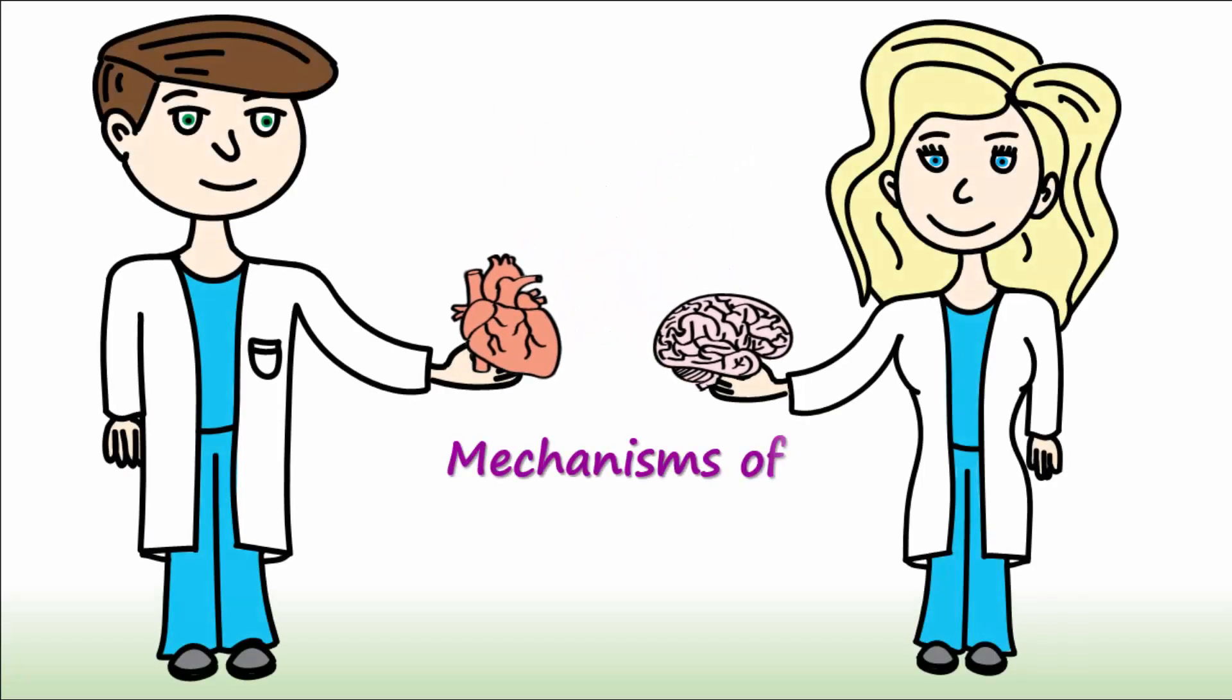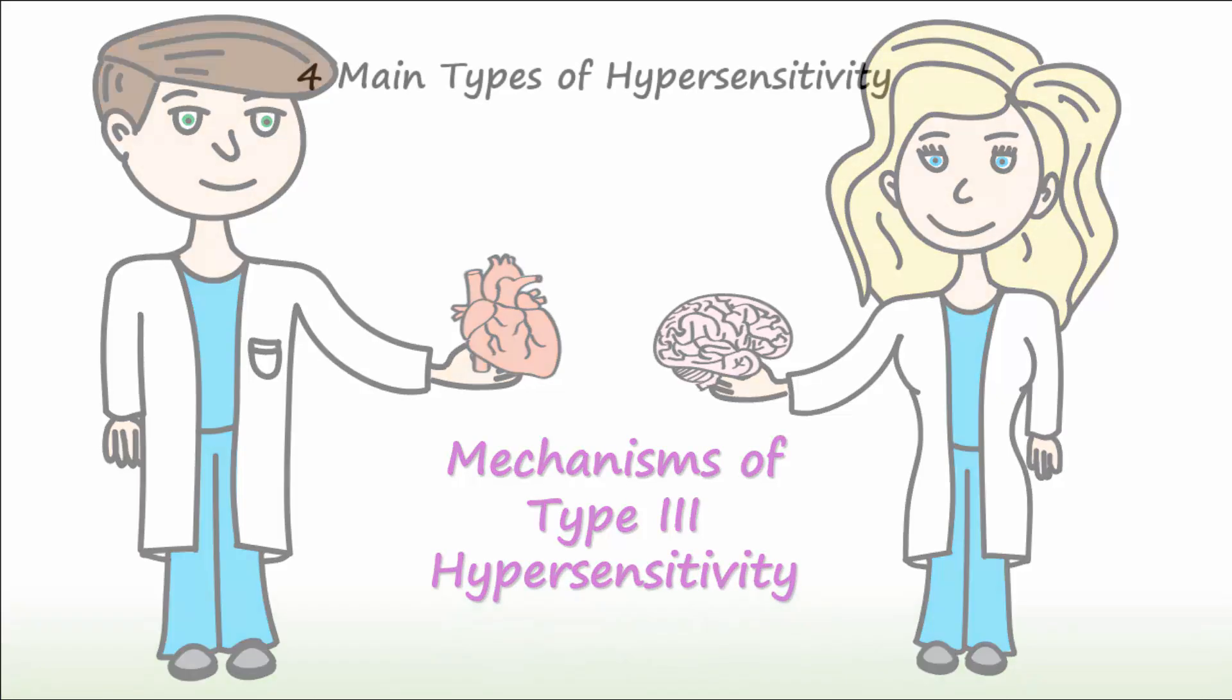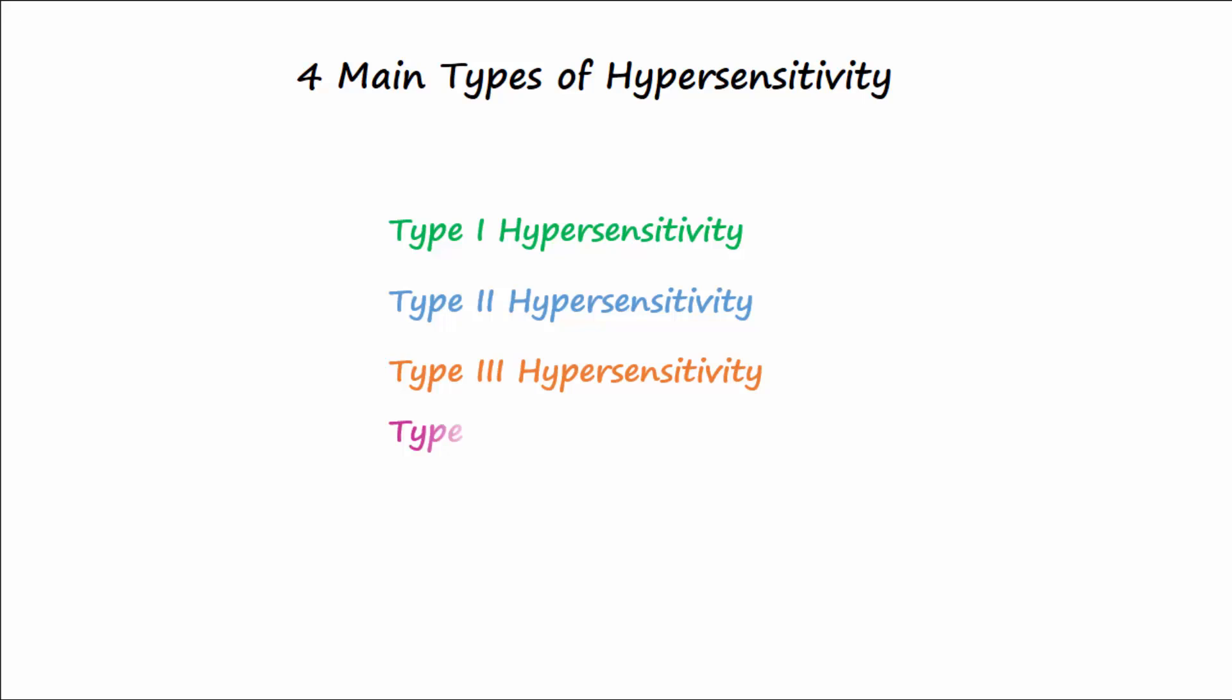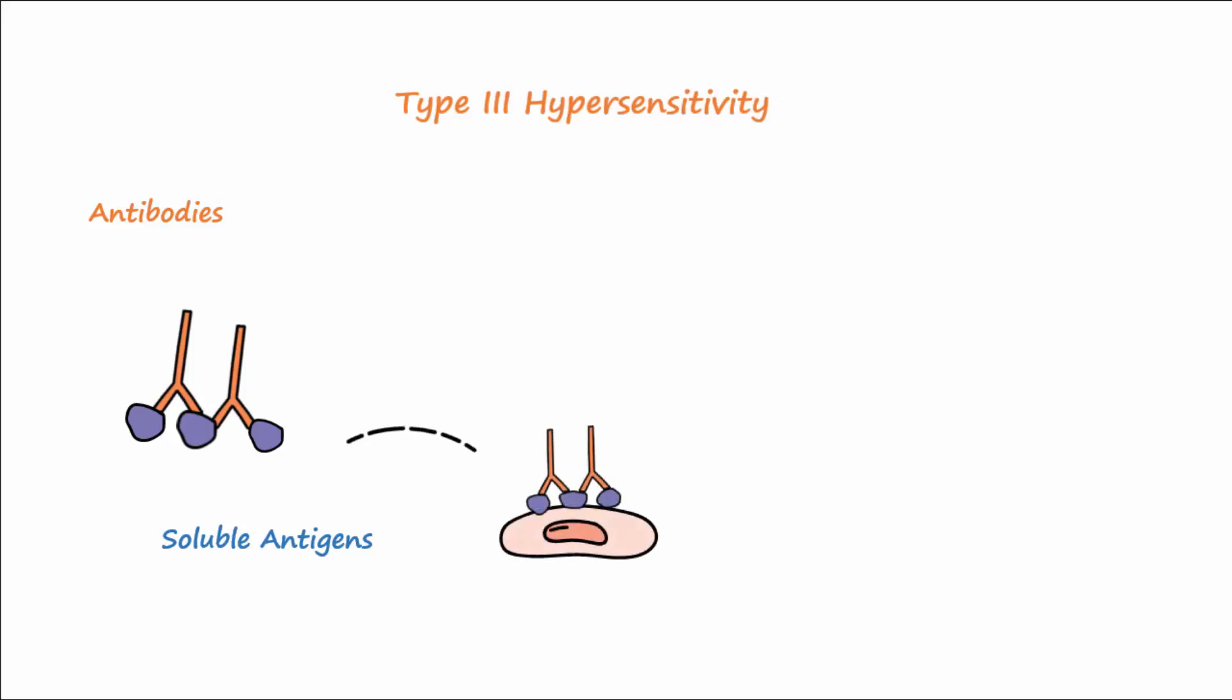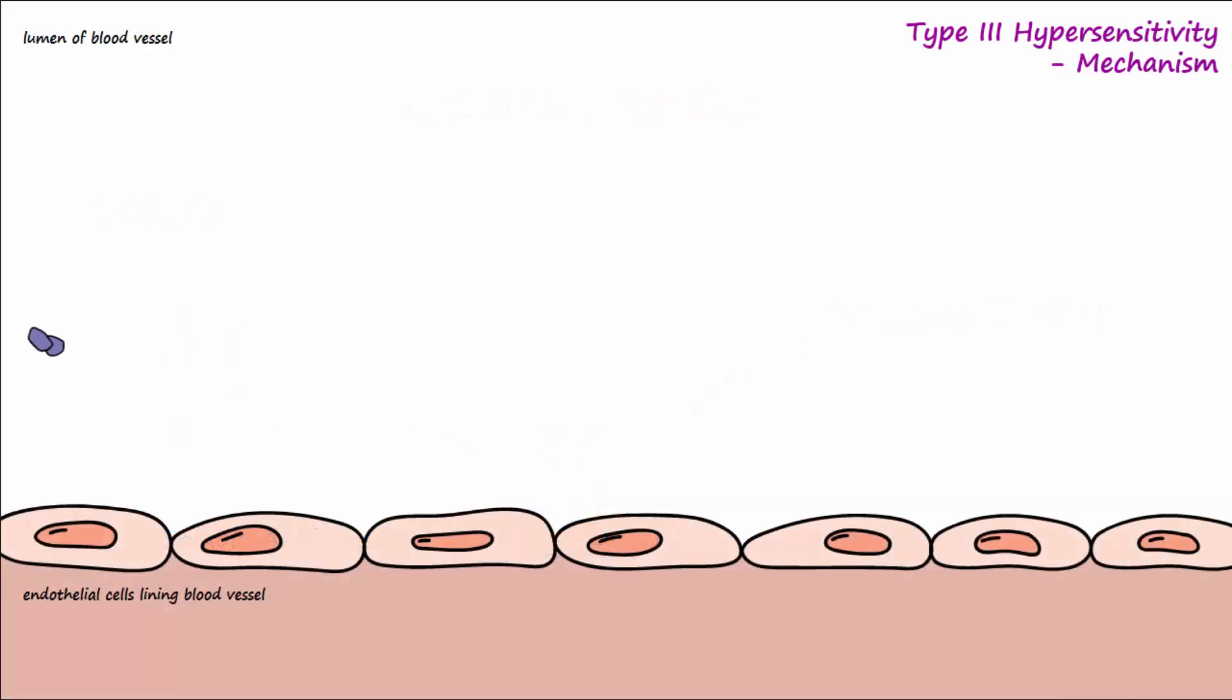Let's discuss the mechanisms of Type 3 hypersensitivity reactions. Type 3 hypersensitivity results when antibodies bind to soluble antigens, deposit on body tissues, and cause damage through complement activation.